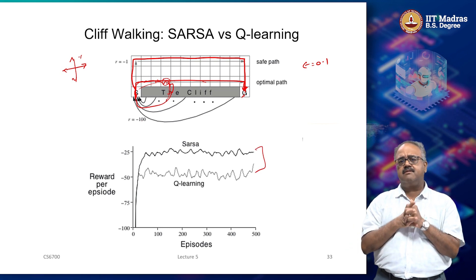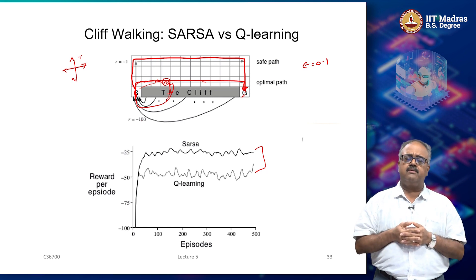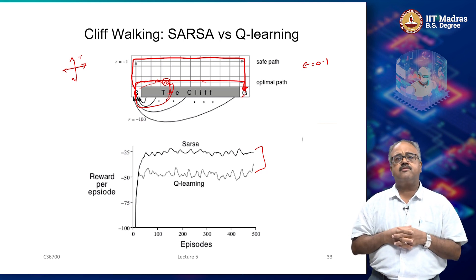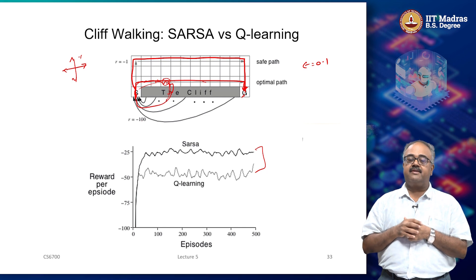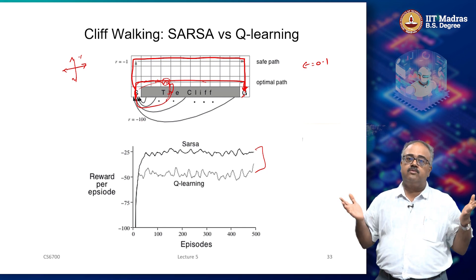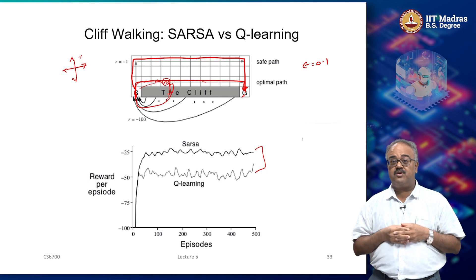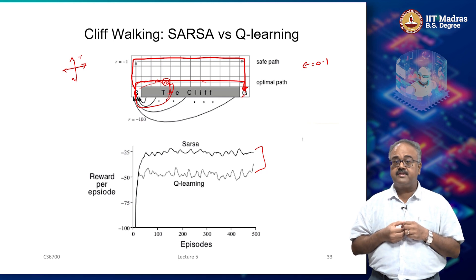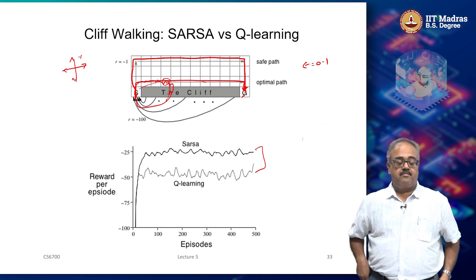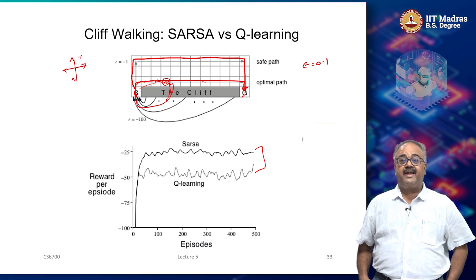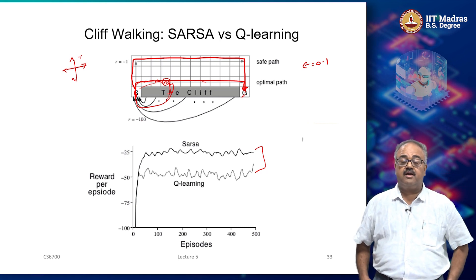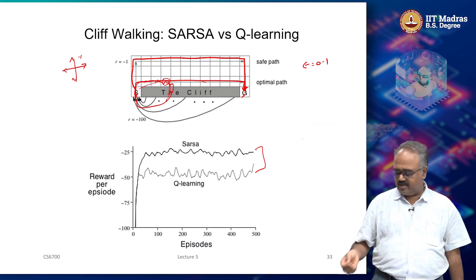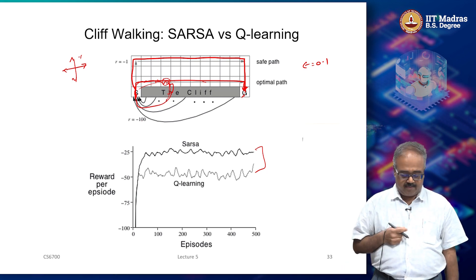Having said this, with modern deep architectures, it makes more and more sense to use Q-learning as an off-policy update mechanism, because we want to do a lot of computation with neural networks in batch mode. When doing batch mode computation it makes more sense to use off-policy learning than on-policy. Therefore, more and more often you will find Q-learning or its variants being used with deep architectures — that is why we will see DQN later, and not deep SARSA.